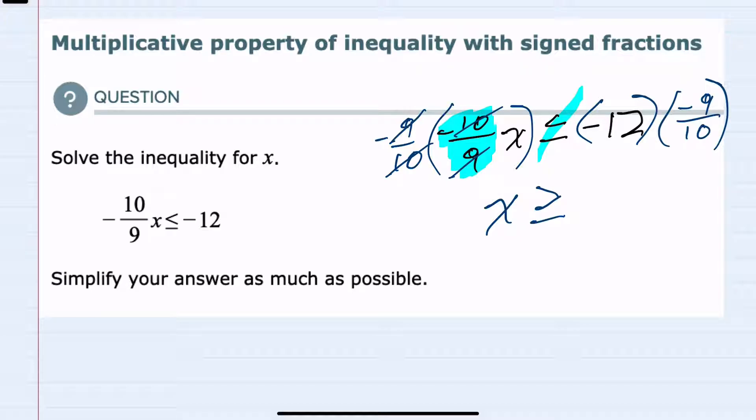Then simplify the multiplication on the right hand side. Since this would be 12 over 1, I can do some cross-canceling here: 2 goes into 10 five times, and 2 goes into negative 12 six times.